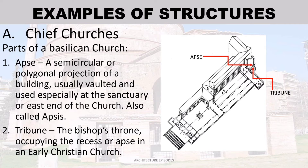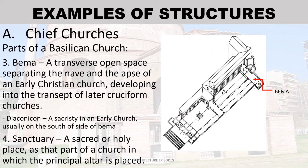Parts of the basilican church: Apse — a semicircular or polygonal projection of a building, usually vaulted, used especially at the sanctuary or east end of the church, also called apsis. Tribune — the bishop's throne occupying the leases or apse in an early Christian church. Bema — a transverse open space separating the nave and apse of an early Christian church, developing into the transept of later cruciform churches.